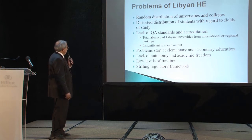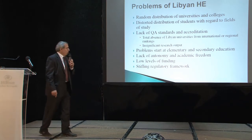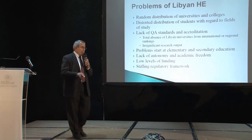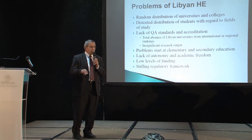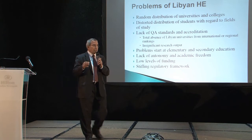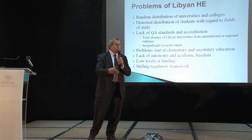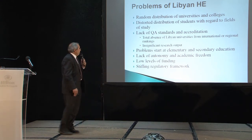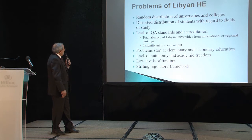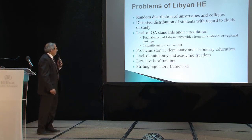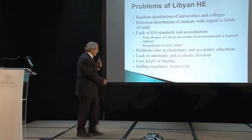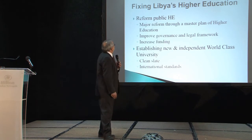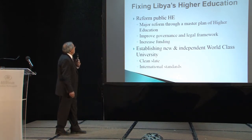Problems start at elementary and secondary education, which also has its own set of serious issues. There is a serious lack of autonomy and academic freedom — even within the university, budgets and purchasing decisions at the department and college level are made at the central university level. There are low levels of funding, and I like to think of it as a stifling regulatory framework that really needs to be overhauled.